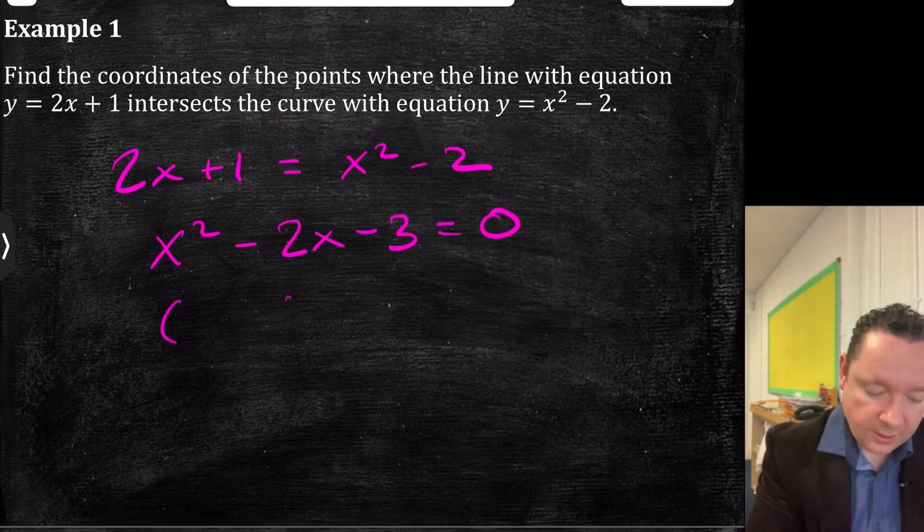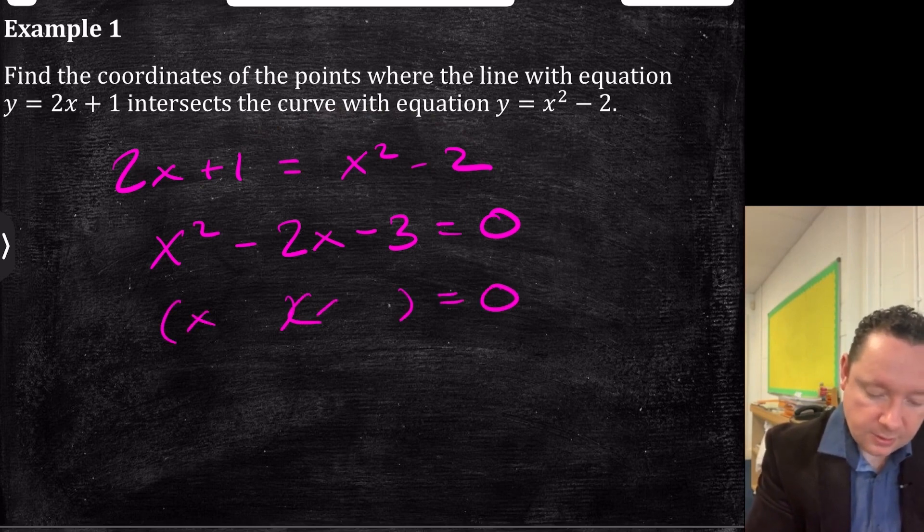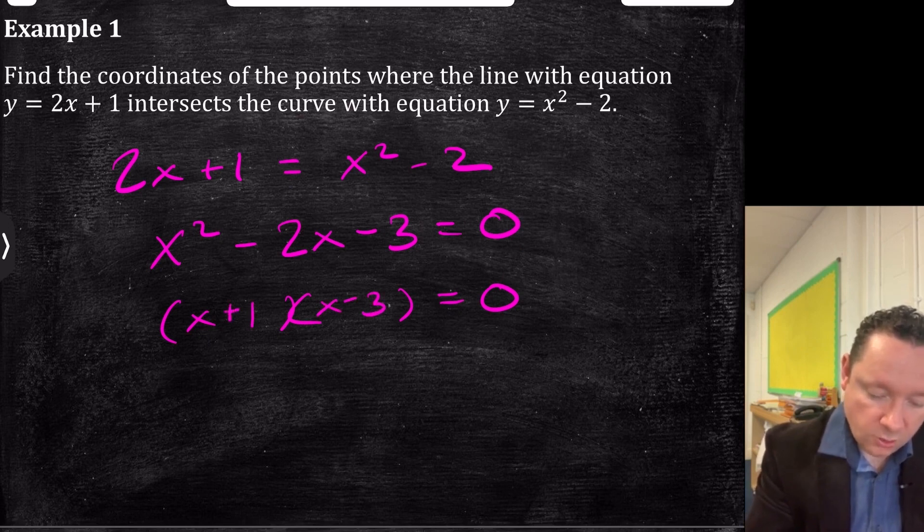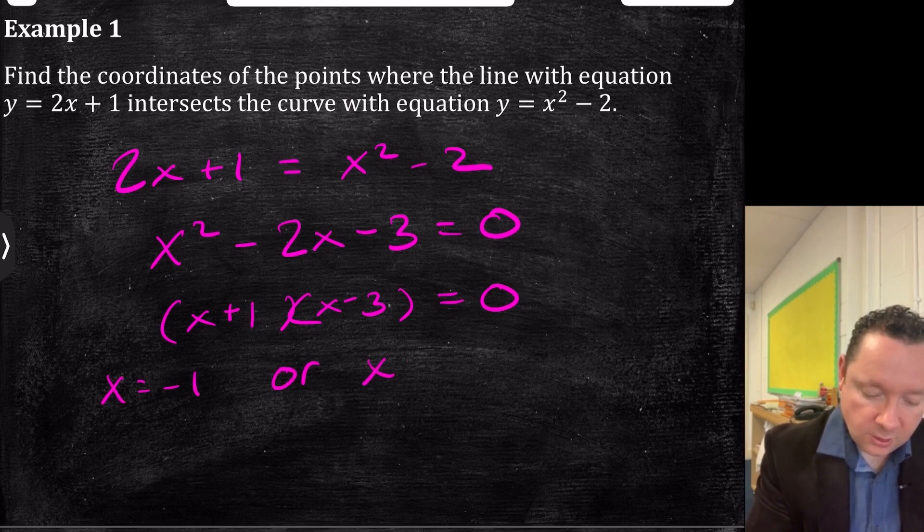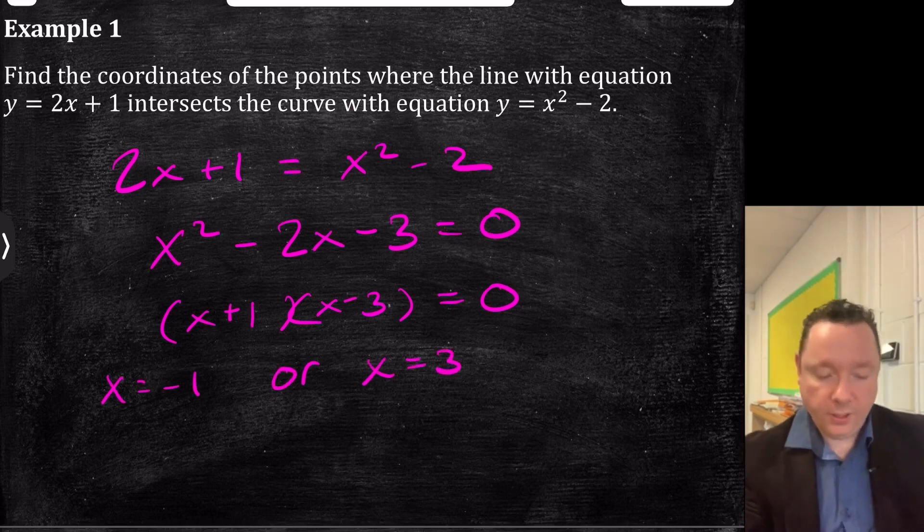Now we check if it's factorisable. x and x, 3 and 1, -3 + 1 is -2. Therefore, x = -1 is one place it touches, and x = 3 is the other place.